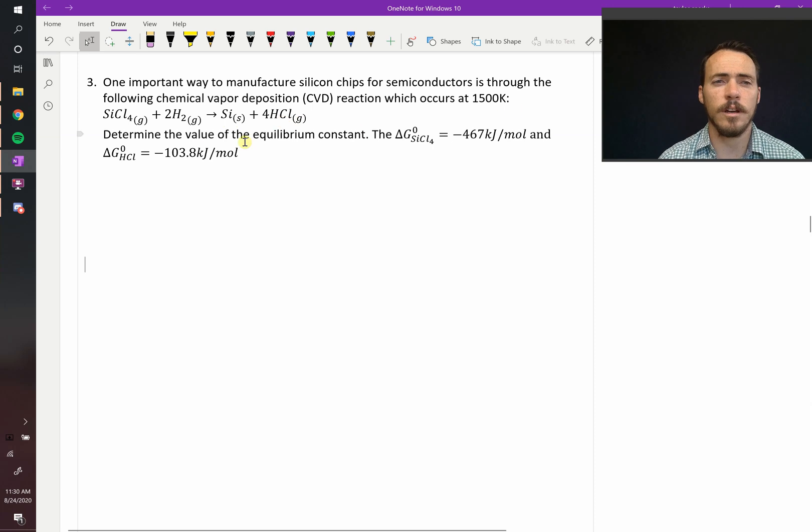If this happens at 1500 K, we're asked to determine the value of the equilibrium constant. What we're given are the formation energies of silicon tetrachloride and hydrochloric gas. These would have to be given at 1500 K for us to be able to determine this.